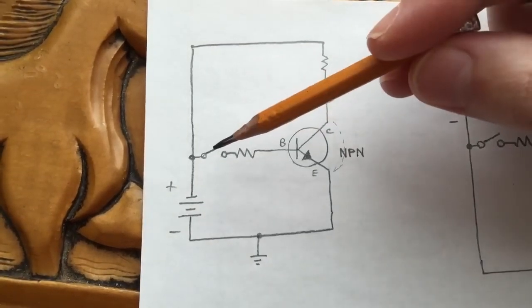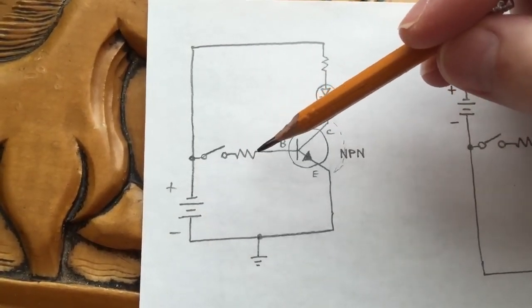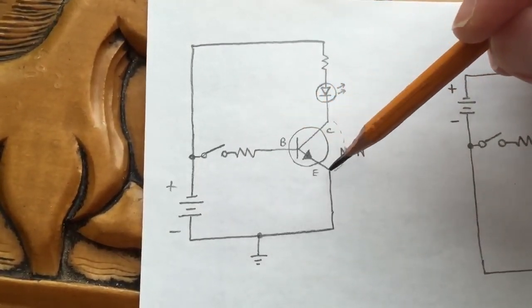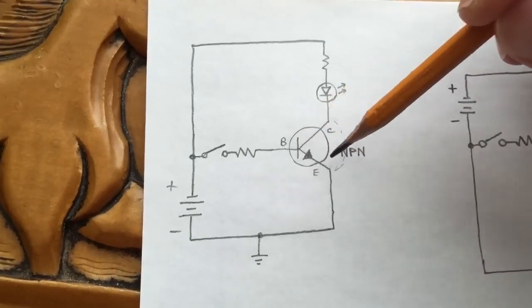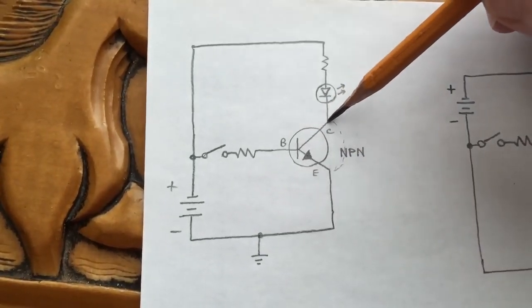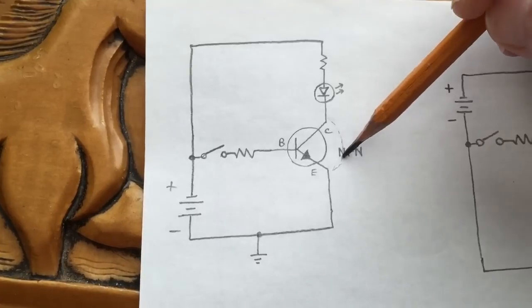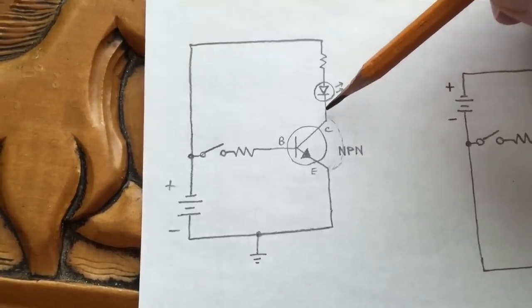Assuming the switch is closed, a small current is flowing into the base, and the transistor is switched on. Because it's switched on, it's as if there is an imaginary jumper between the collector and the emitter.